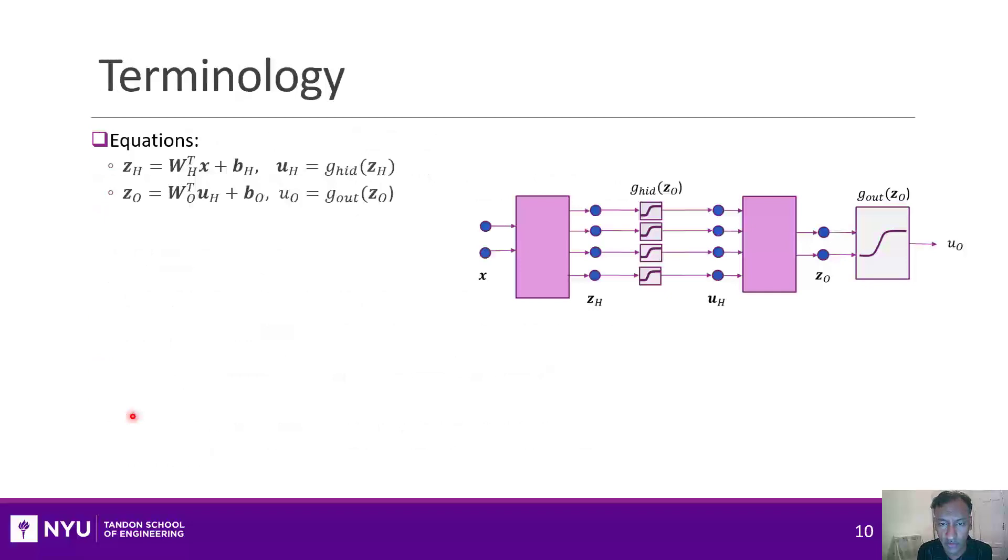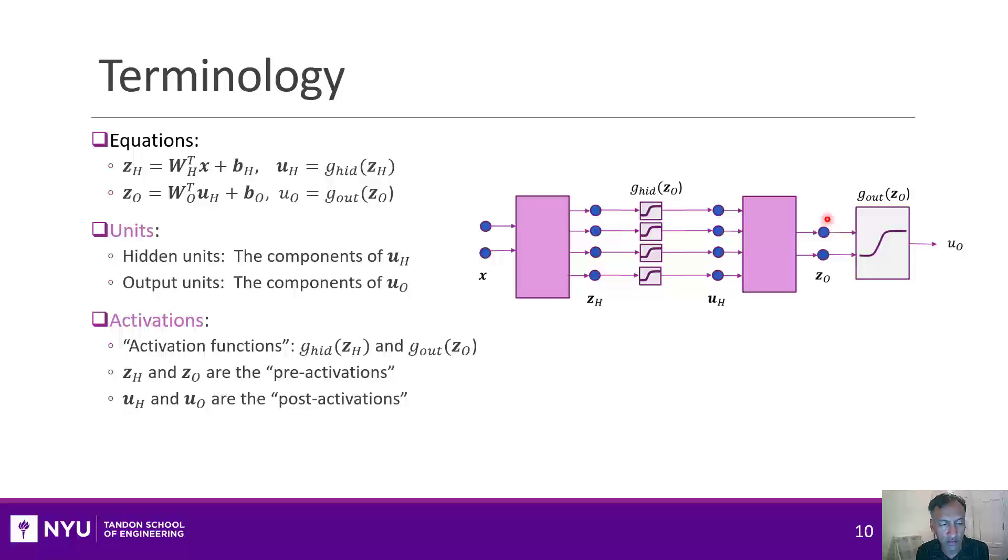Before we go on, I need to introduce a little bit more terminology. Here's the equations for the simple two-layer neural network that we'll be analyzing in this unit, and here's a block diagram. You've heard me use the term already: units. Units will just refer to either the components of the hidden layer output, and those are called the hidden units. In this simple diagram here, there are four such hidden units, and then you might also hear the term output units, which are the output components of the final output layer. You'll also hear the term activation, and that can be used in a couple of different ways. The activation functions are usually the non-linear functions that are applied after the mapping. So there's the hidden activation and the output activation. The inputs to the non-linear function are sometimes called the pre-activations, and the outputs are called the post-activations.